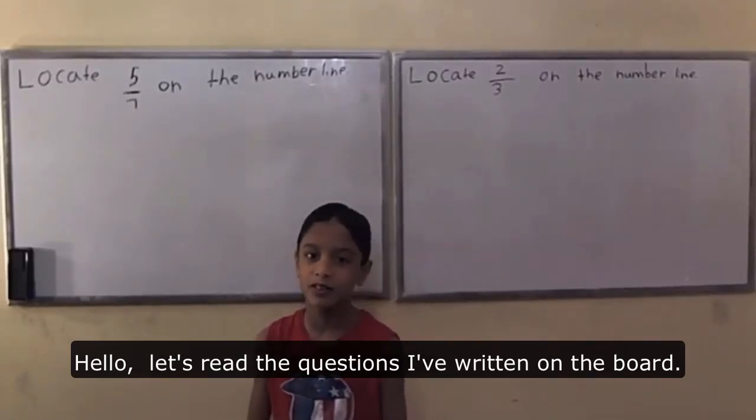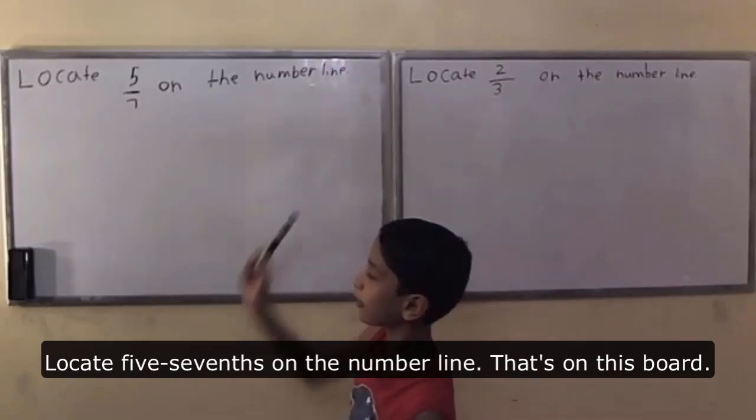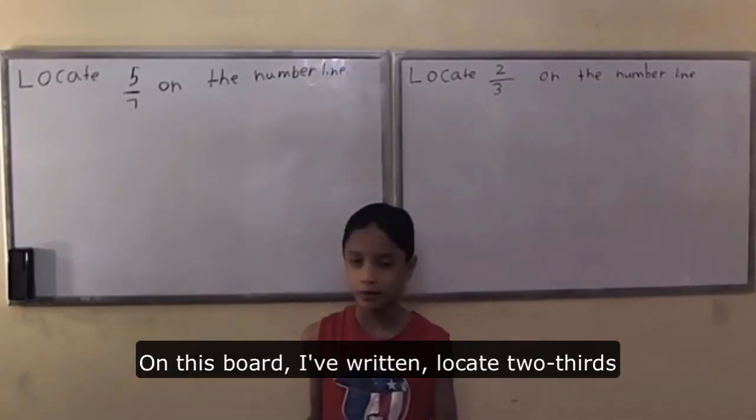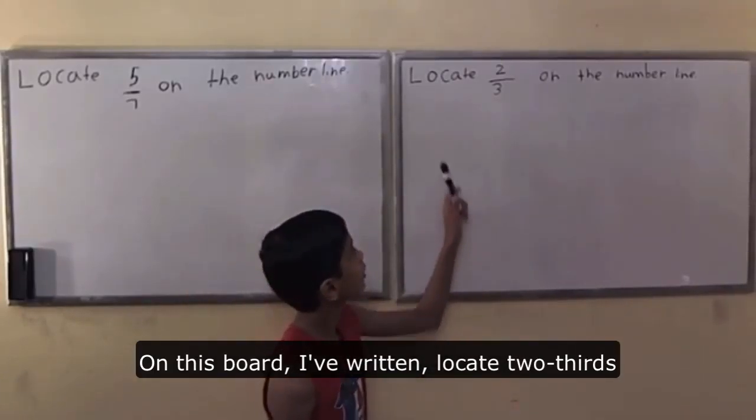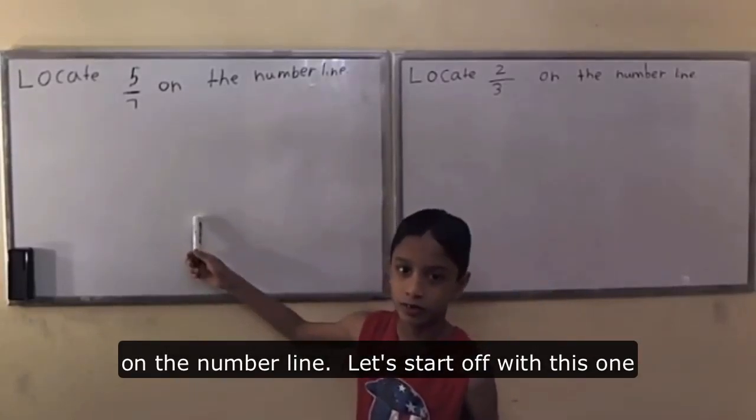Hello! Let's read the questions I've written on the board. Locate 5/7 on the number line—that's on this board. On this board I've written locate 2/3 on the number line. Let's start off with this one.